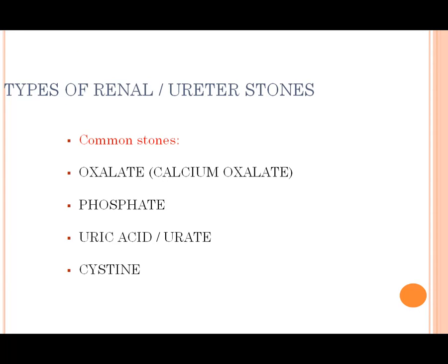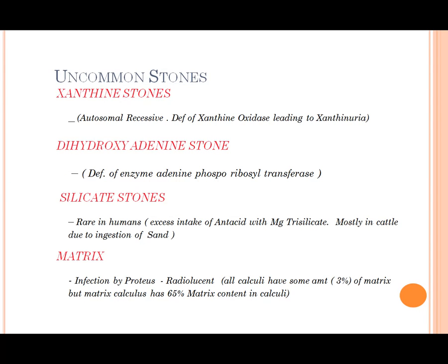The types of renal and ureter stones: common stones include oxalates, phosphates, uric acid, and cysteine. Uncommon types include xanthine stones — yellow colored — and dihydroxyadenine stones.